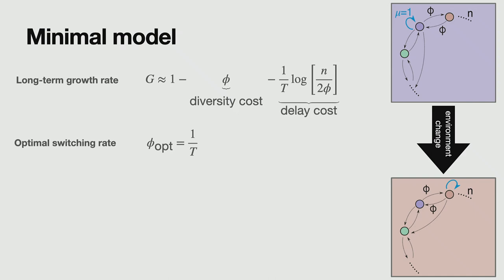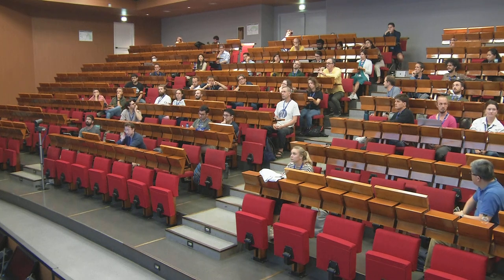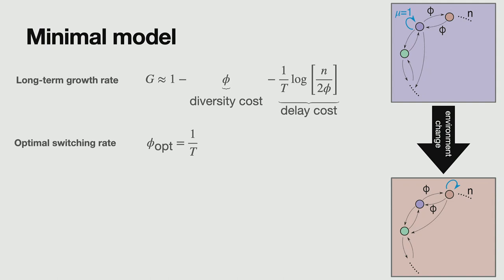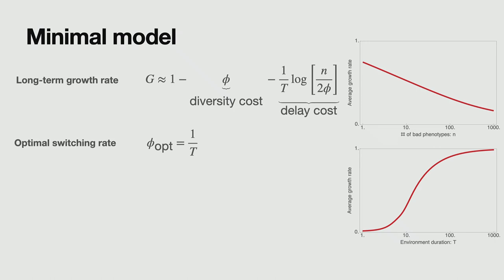So you have a diversity cost, which is the cost of switching to different phenotypes. And then you have a delay cost, which is after every environment, you need some time to expand the pre-adapted subpopulation to take over the population. Just a curiosity. I mean, it looks like it's not a-dimensional what you have in the log. So there should be another time constant. That I would have to look up. There are some rescalings that we did. Because phi is divided by the growth rate. So I think that's why it's become undimensional. Because we rescaled it by the maximum growth rate. But yeah, it's a good point. But I might come back to it.